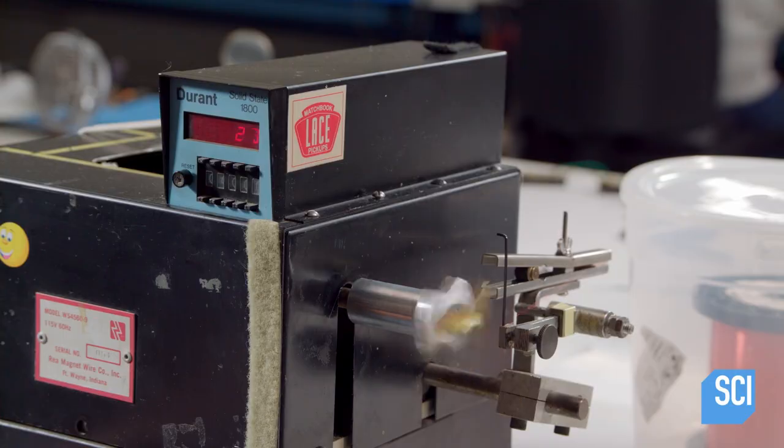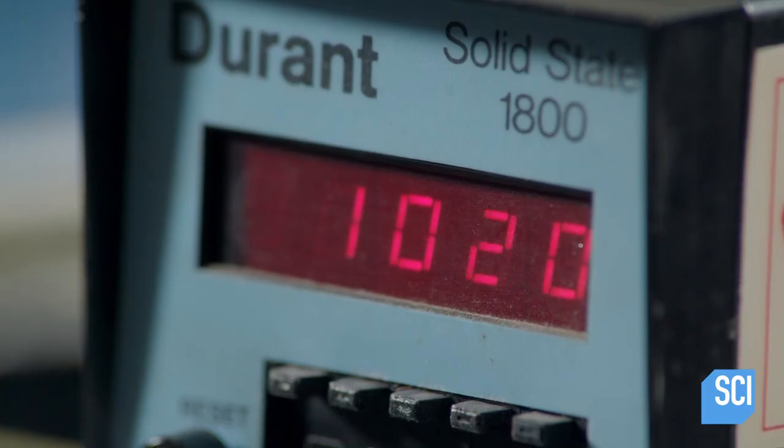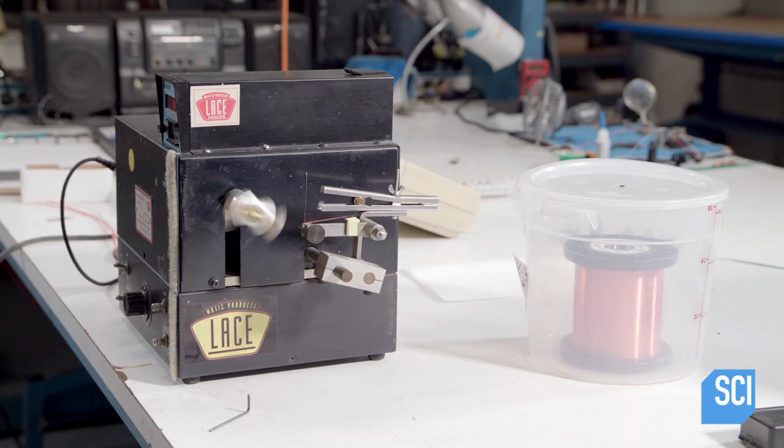As it spins, the bobbin takes up more copper wire, at first settling between the teeth and ultimately building up a wire wad that's 4,000 windings thick.